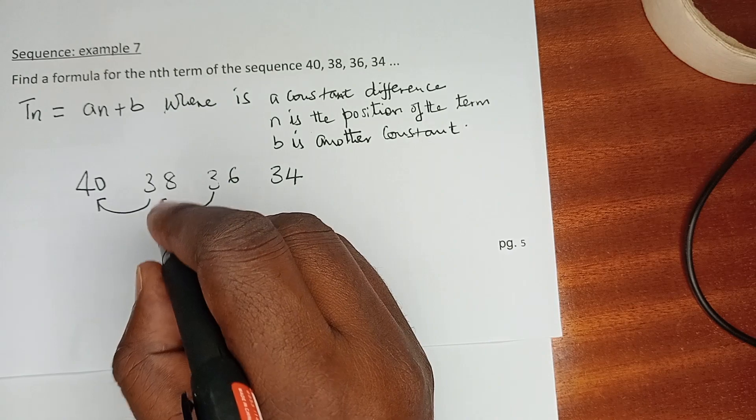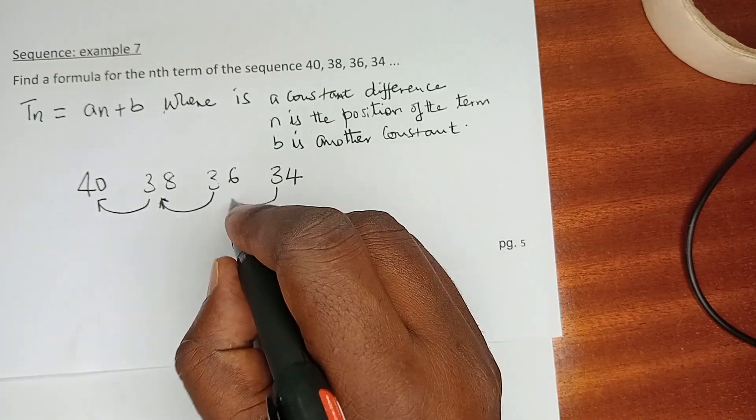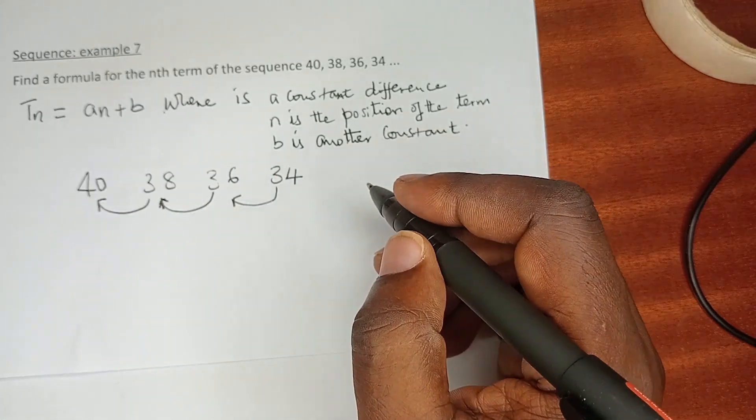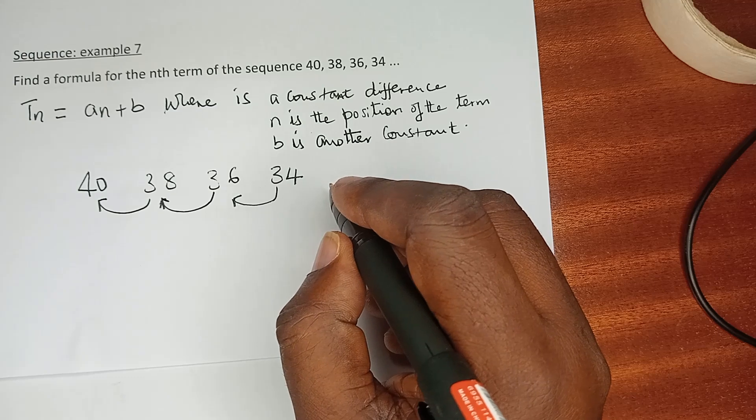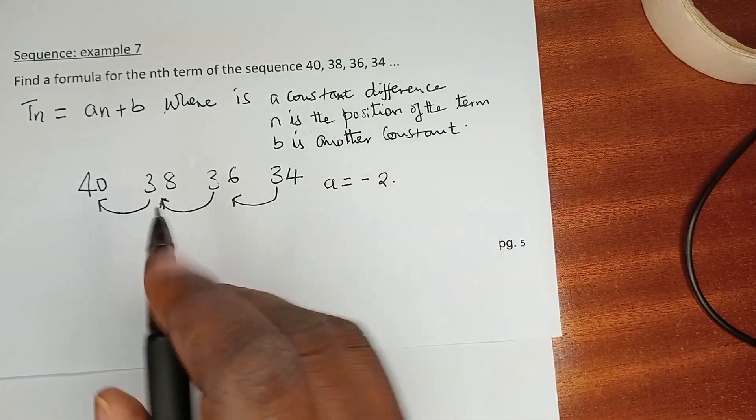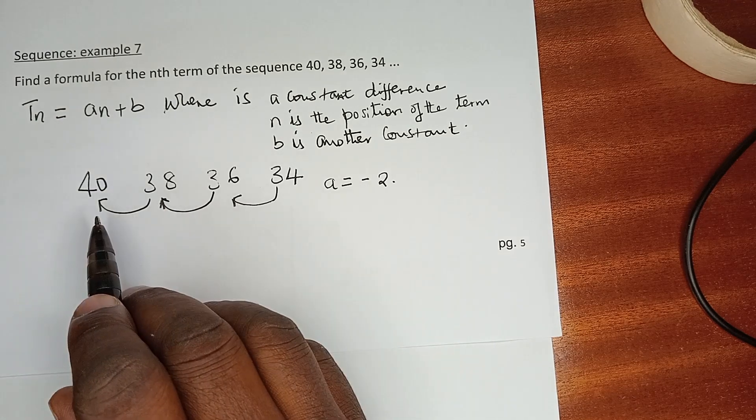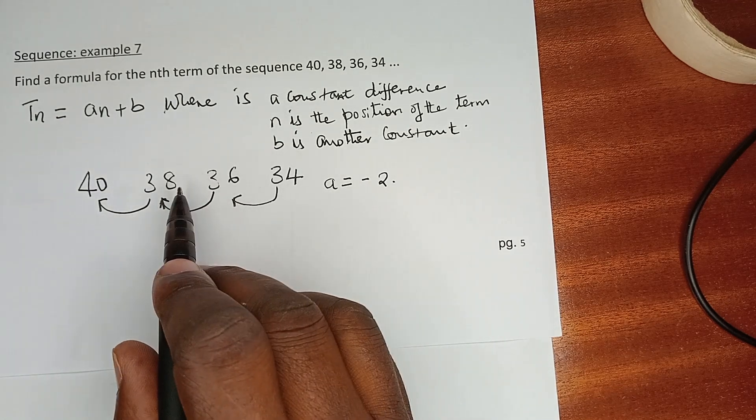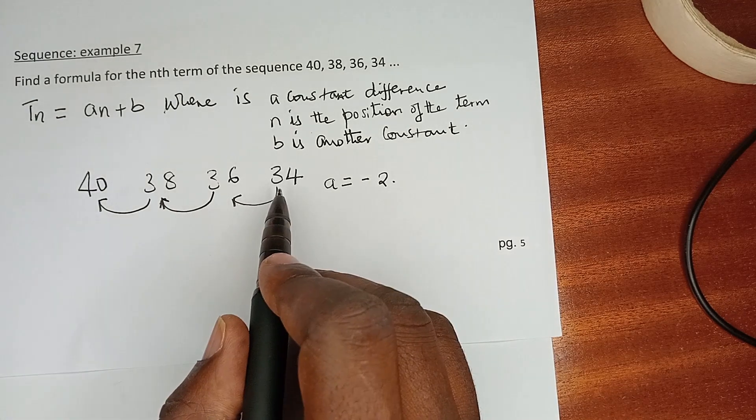you can clearly see that our a is equals to -2, because 38 minus 40 is -2, 36 minus 38 is -2, 34 minus 36 is -2.